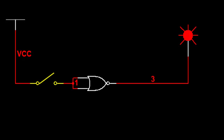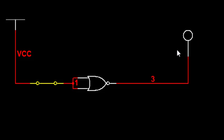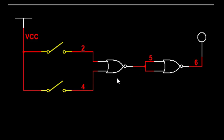Now we see the working of NOR as a universal gate. First, NOR as NOT: the NOR gate inputs are shorted, so input is 0 gives output 1; when input is 1, output becomes 0. This NOR gate is working as a NOT gate.